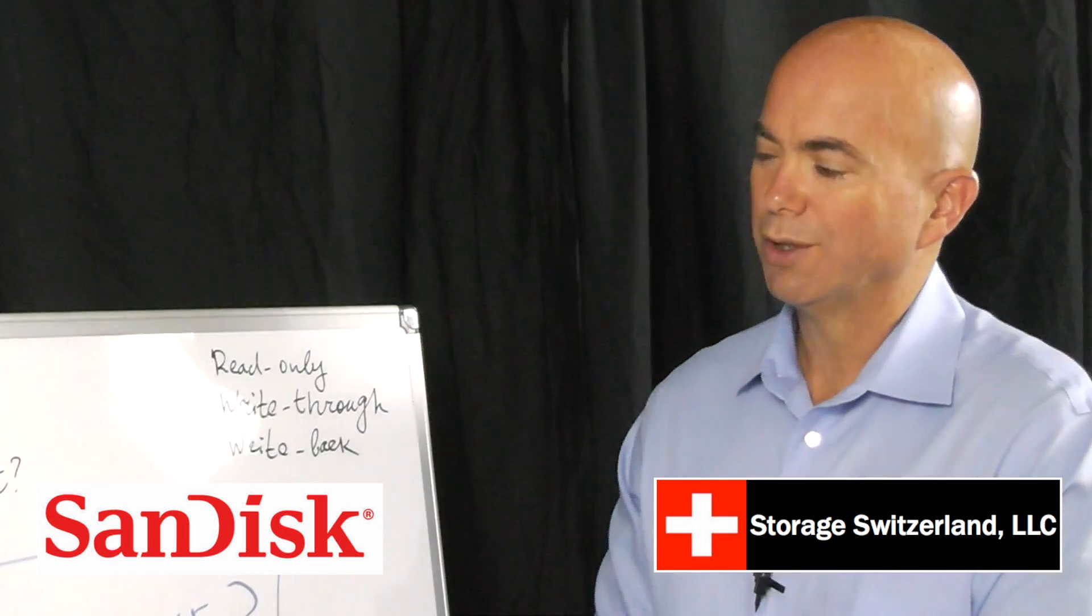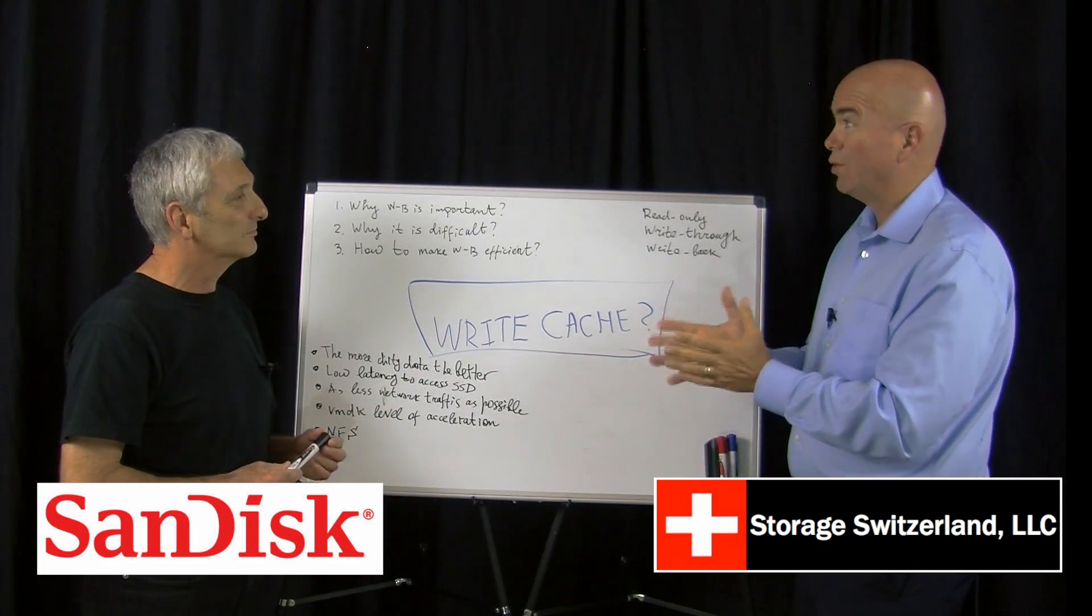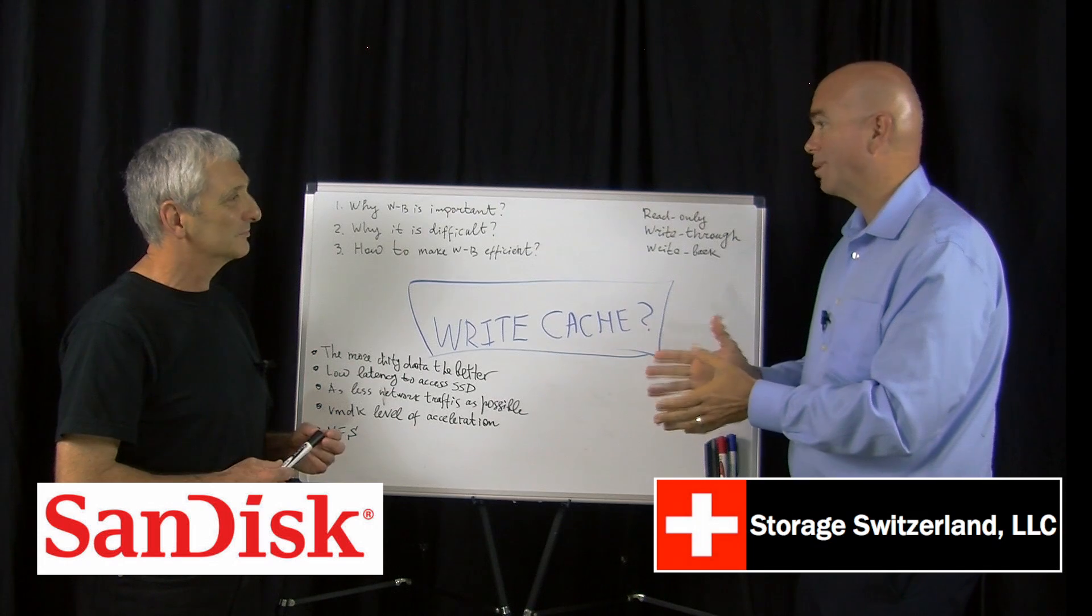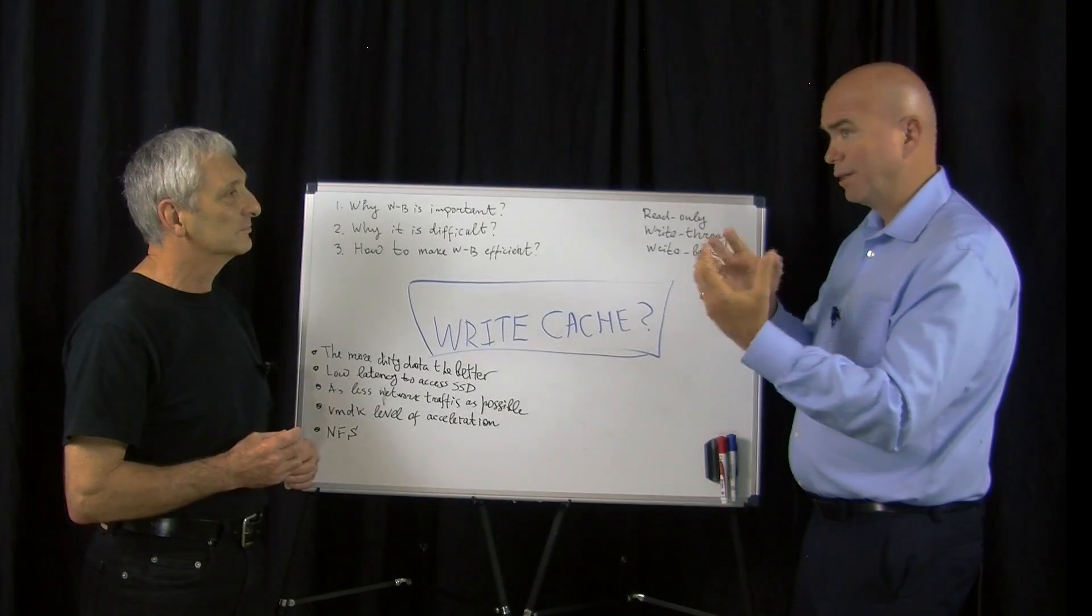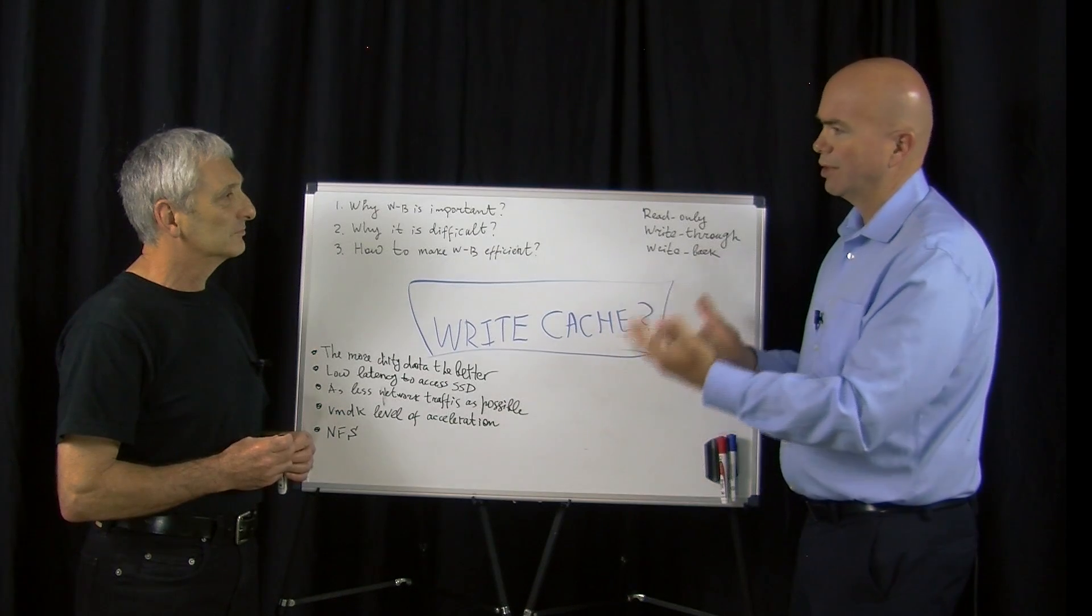As I walk around VMworld this year, I'm starting to hear a lot about write-back caching, and it's something that a lot of people are asking for. We even have a few vendors that are claiming to be delivering it, but I think there's some caveats that people need to be aware of when we start talking about write-back caching versus read caching. But before we jump into that subject, let's give the viewers a sort of caching 101. What are we talking about when we start talking about caching?